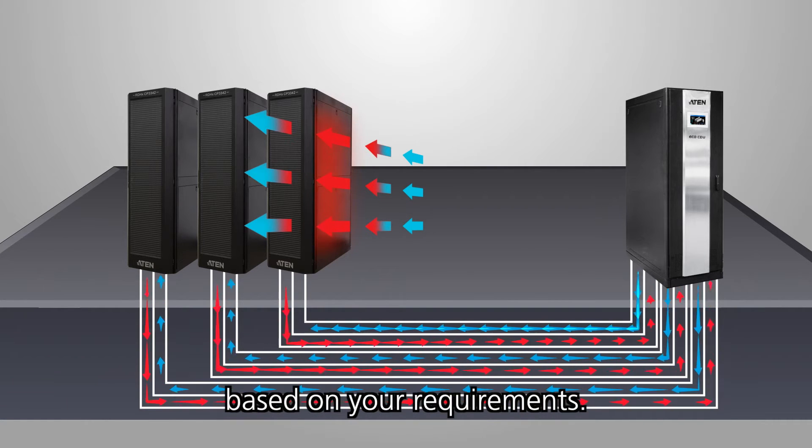Once installed, you can adjust the cooling capacity based on the specific heat loads of server racks. This allows the CDU to achieve optimum performance based on your requirements. To add server racks, simply enhance the cooling system settings and add rear-door heat exchangers to the new racks.